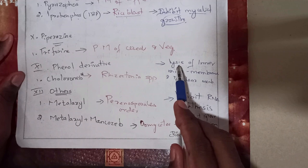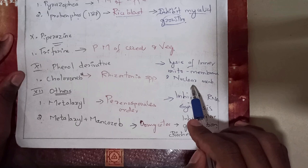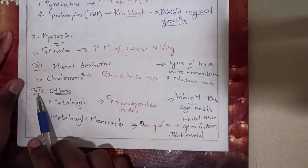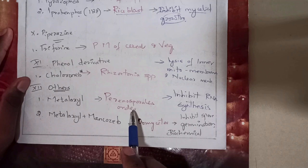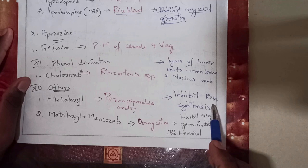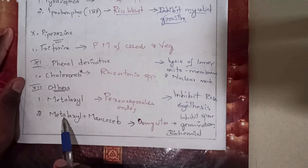The twelfth and last group is other compounds. The first compound is metalaxyl, usually used against the Peronosporales order of fungi; its mode of action inhibits RNA synthesis of fungi. The second compound is a combination of metalaxyl and mancozeb, used against the ectophosphatase and oomycete group of fungi; its mode of action inhibits spore germination and biochemical reactions.